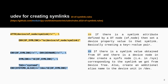Here is a U-Dev rule that creates the sysfs entries and also the aliases in /dev. The first part in yellow tells us: if there is a symlink attribute defined in the device tree node, then set a device property value to that symlink, basically creating a key-value pair. The second part tells us: if there is a symlink value obtained from the device tree and there is a device node in /dev, create a sysfs node in /sys corresponding to that symlink, and also create an additional alias name to the device node in /dev.